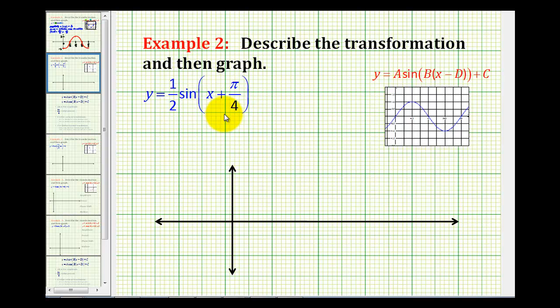The first step here is to recognize that a is equal to one-half, which will affect the amplitude, and d would be equal to negative pi over four, since it does have to be in the form of x minus d. So it would be x minus negative pi over four, which is the same as x plus pi over four. Now that we know the values of a and d, we should be able to conclude the transformations.